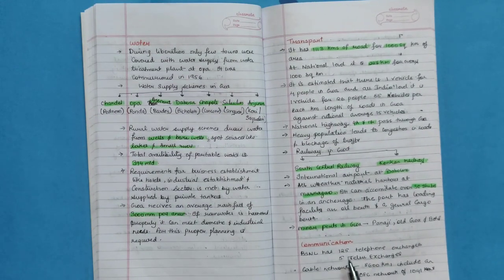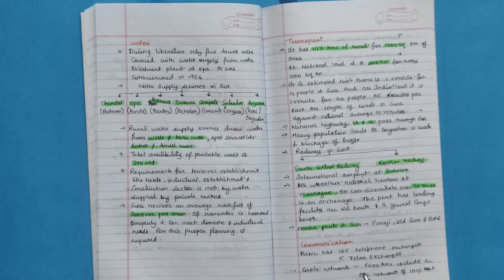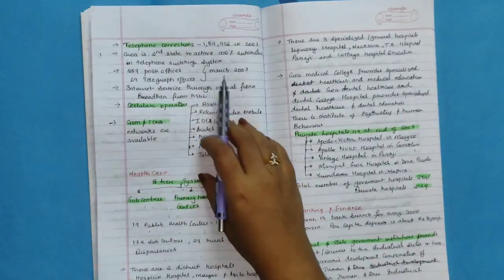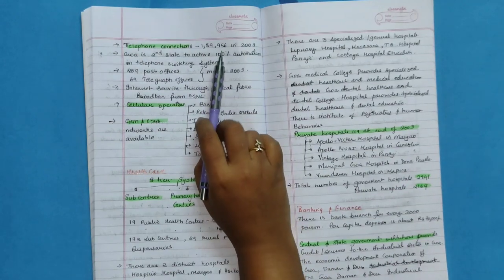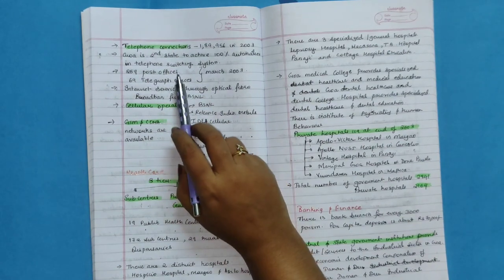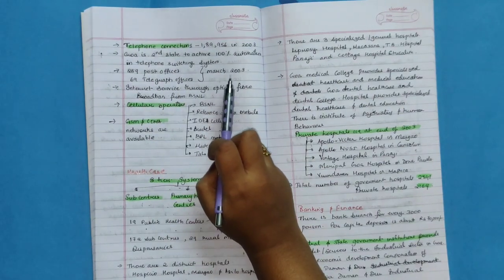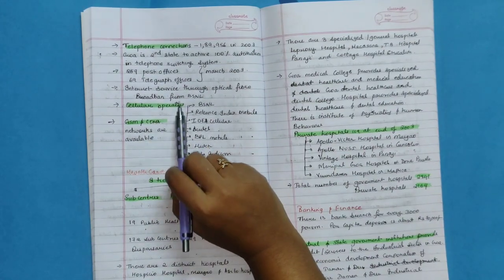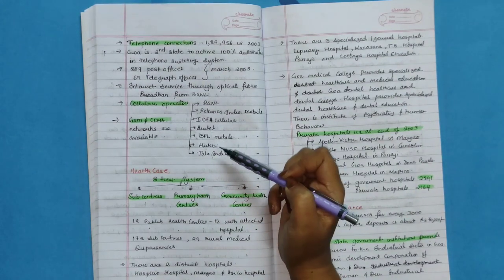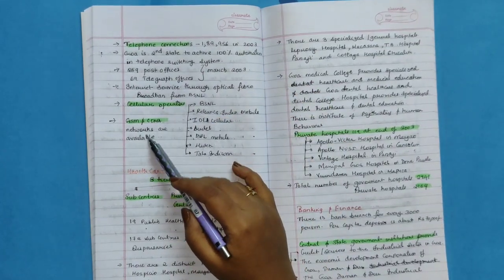Communication. BSNL has 125 telephone exchanges, 5 telecom exchanges. Cable network 8,600 kilometers, include an OFC network of 1,041 kilometers. Telephone connections: 1,89,956 in 2003. Goa is second state to achieve 100% automation in telephone switching system. 259 post offices and 69 telegraph offices in March 2003. Internet service through optical fiber broadband from BSNL. Cellular operators like BSNL, Reliance, Idea, Airtel, BPL, Hutch, Tata Indicom. The data is old as I said. GSM and CDMA networks are available.